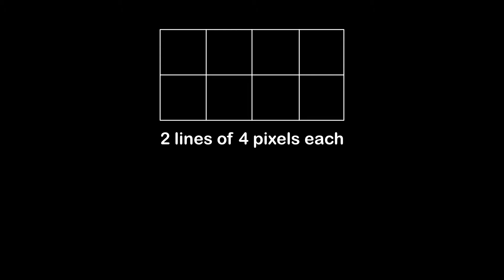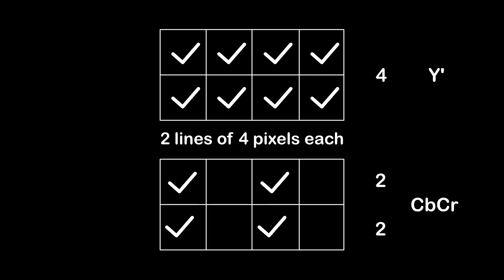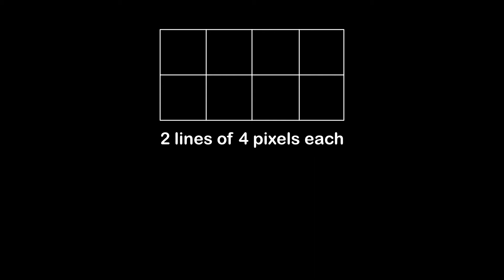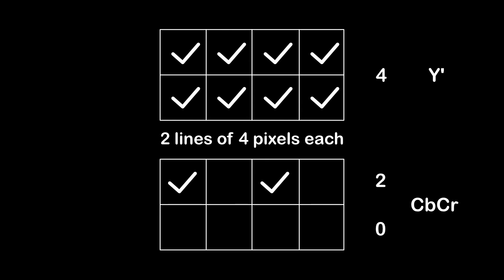A 422 signal samples the full luma component of both lines — again 4 — but only half of the chroma component on each line compared to the luma, 2 and 2 respectively. A 420 signal again samples the full luma component of both lines — 4 — half the chroma component on the first line — 2 — and no chroma component on the second line — 0.